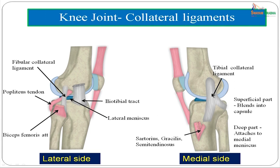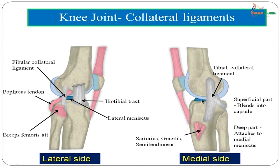The medial collateral ligament — also called the tibial collateral ligament — extends from the medial condyle of the femur down onto the medial aspect of the tibia. It is a flattened, band-like structure and is weaker than the fibular collateral ligament. Lower down it divides into two parts: a superficial part that blends with the joint capsule, and a deep part that is firmly attached to the medial meniscus. In contrast, the fibular collateral ligament is separated from the lateral meniscus by the tendon of popliteus.